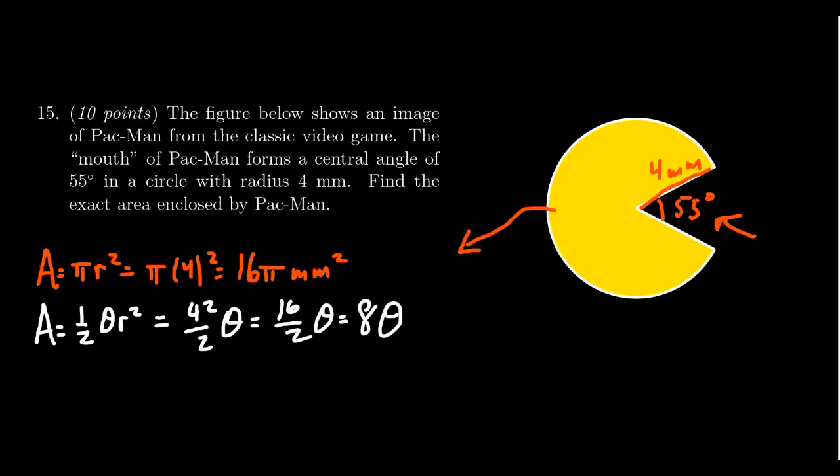The angle does need to be in radians. That's a very important part of this problem. It's given to us in degrees, so we have to shift it over into radians. If theta equals 55 degrees, we're going to multiply that by pi over 180 degrees.